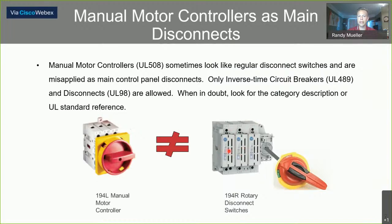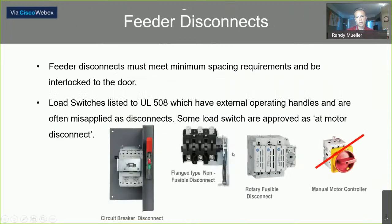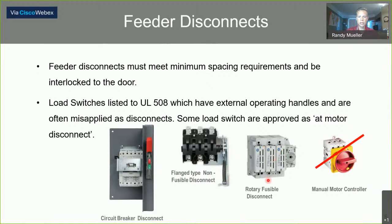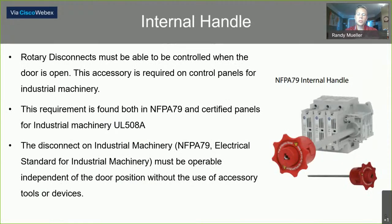The 194L has a UL 508 rating, while the 194R has a UL 98 rating. Devices with a UL 98 rating are allowed to be used in the feeder circuit as a main disconnect. For circuit breakers, look for a UL 489 rating. A big requirement is minimum spacing between conductors — something not met by a UL 508 device. There are also requirements for interlocking to the door. You can see a circuit breaker with a flanged operator, a non-fusible visible blade disconnect, and a rotary style — all approved for main disconnects.